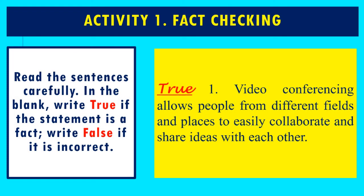Activity 1: Fact Checking. You are going to read the sentences carefully. In the blank, write true if the statement is a fact and write false if it is incorrect. For example, 'video conferencing allows people from different fields and places to easily collaborate and share ideas with each other.' Write true or false in the blank.